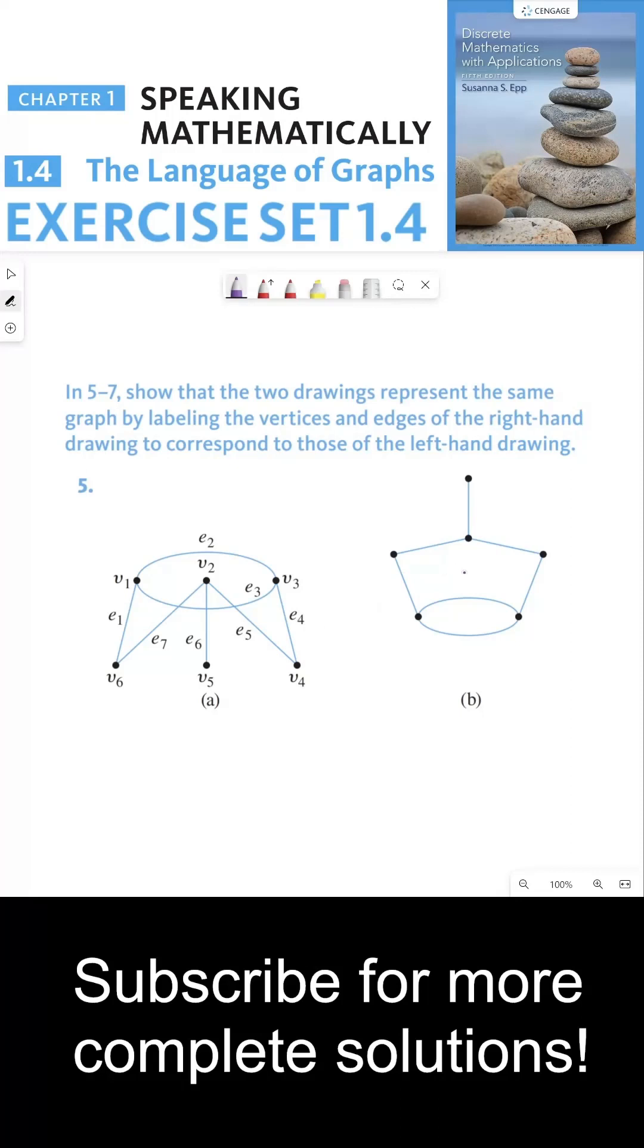So the first thing I would notice is that with both of these graphs, there's only one vertex with degree 1. So we could say right off the bat that this vertex would have to be v5.